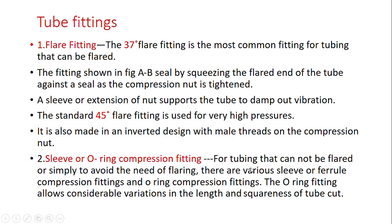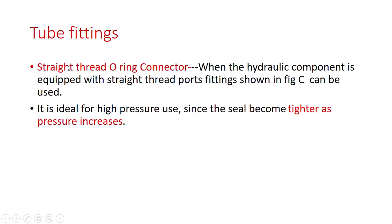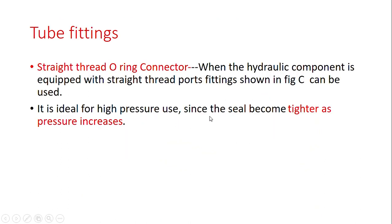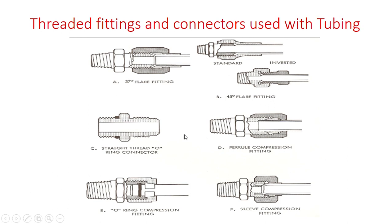For tubing that cannot be flared, or simply to avoid the need for flaring, there are various sleeve or ferrule compression fittings and O-ring compression fittings. The O-ring fitting allows considerable variation in the length and squareness of the tube cut. The straight-thread O-ring connector is ideal for high-pressure use, since the seal becomes tighter as pressure increases.